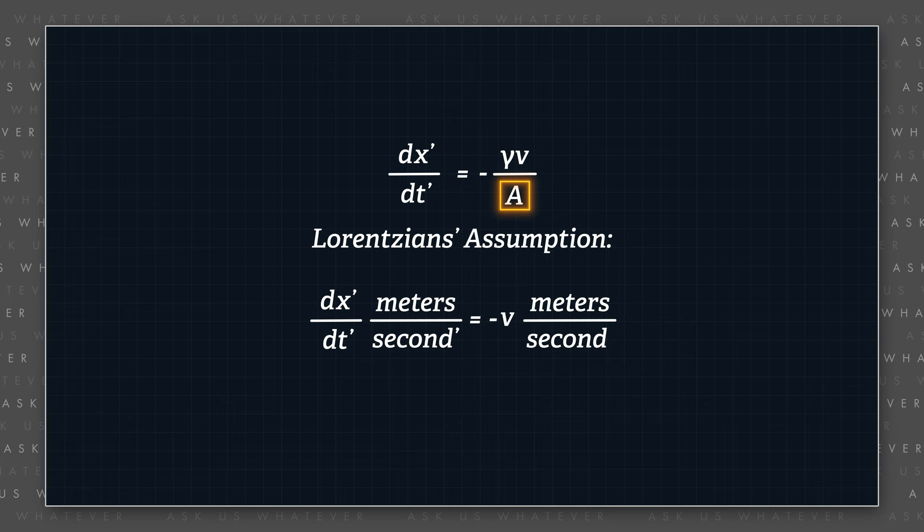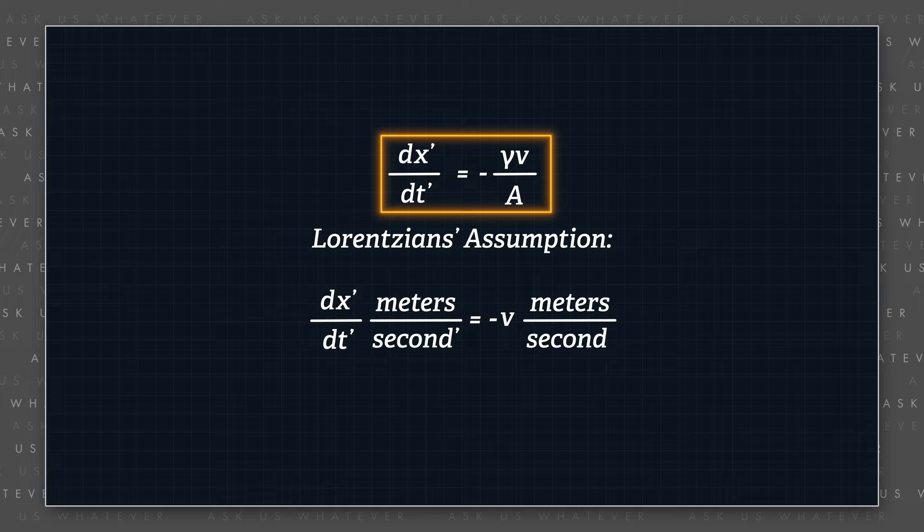Their conclusion that capital A must equal gamma cannot be arrived at using this formula alone. The Lorentzians must also invoke their assumption about distance conversion, namely, they must invoke the assumption that lengths contract in order to deem capital A to be equal to gamma. And since our goal is to see if we can derive the most general form of transformation without making a priori assumptions about light speed or length contractions, let's pursue a different approach to deriving the value of capital A.